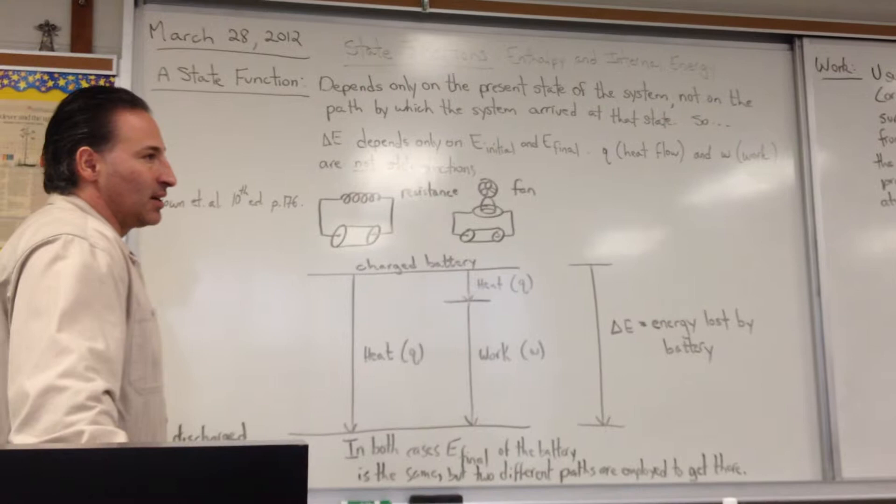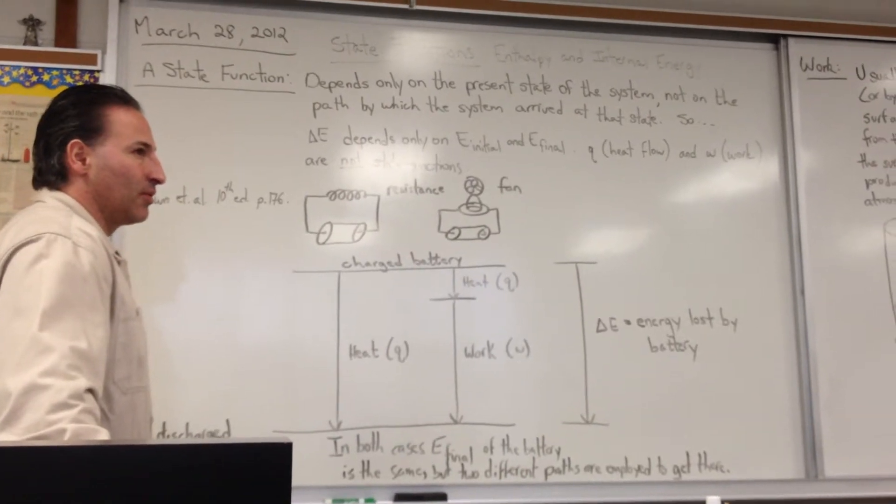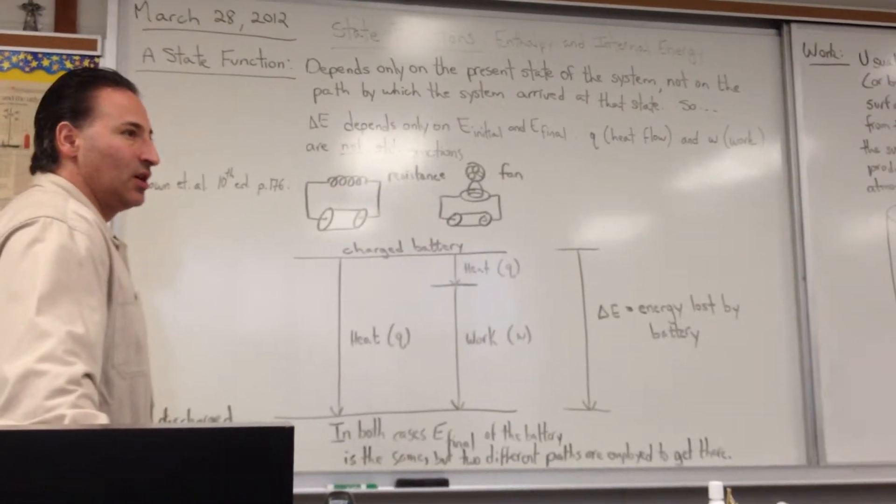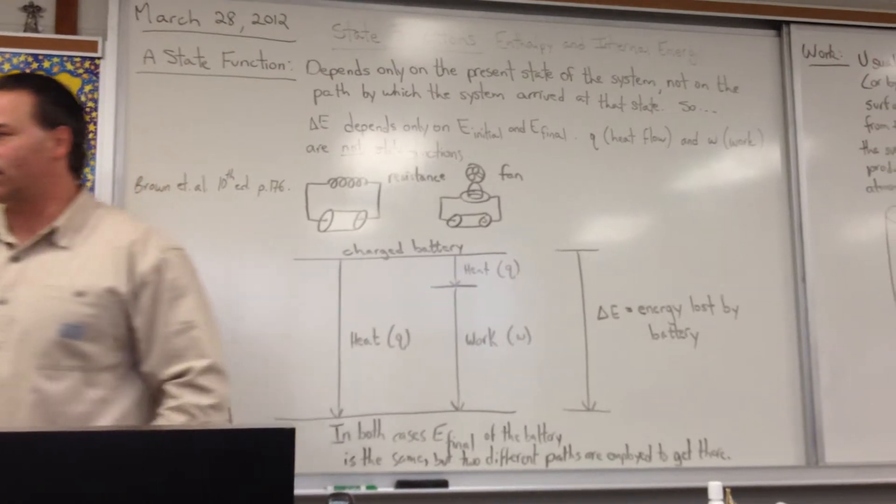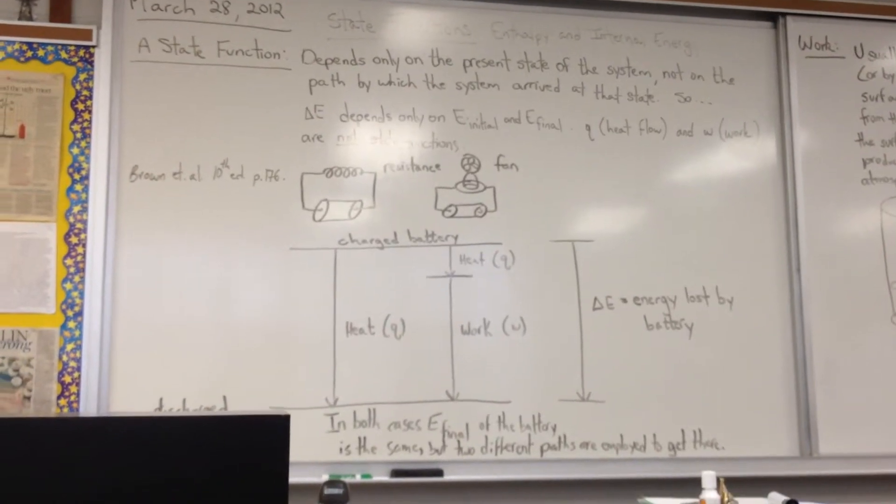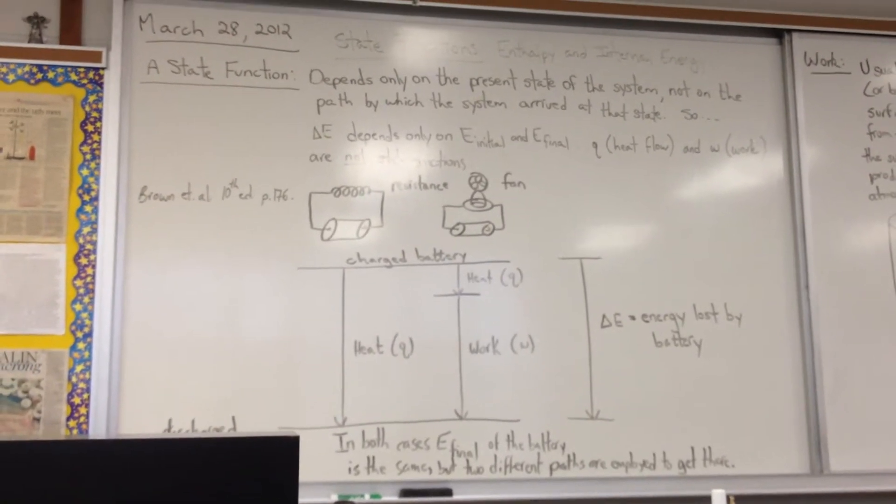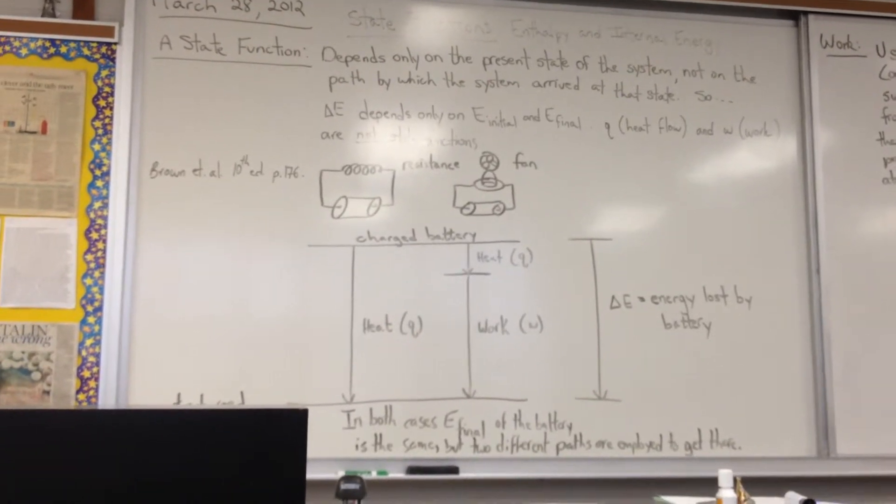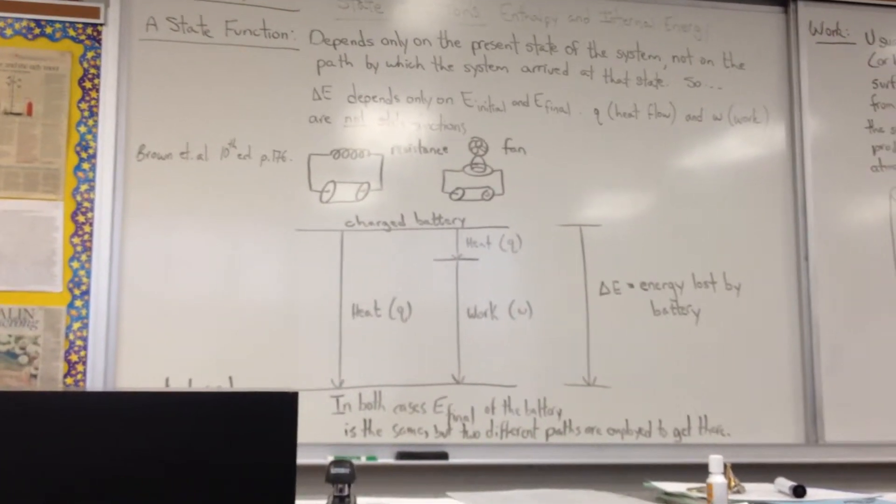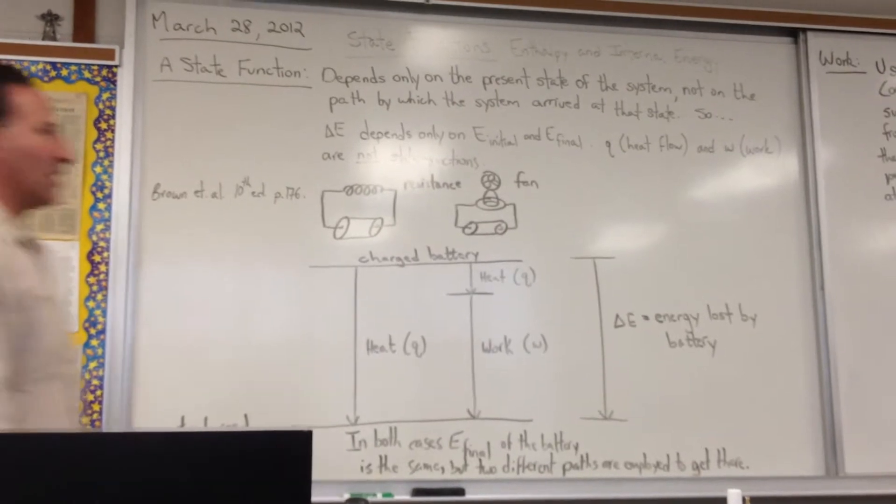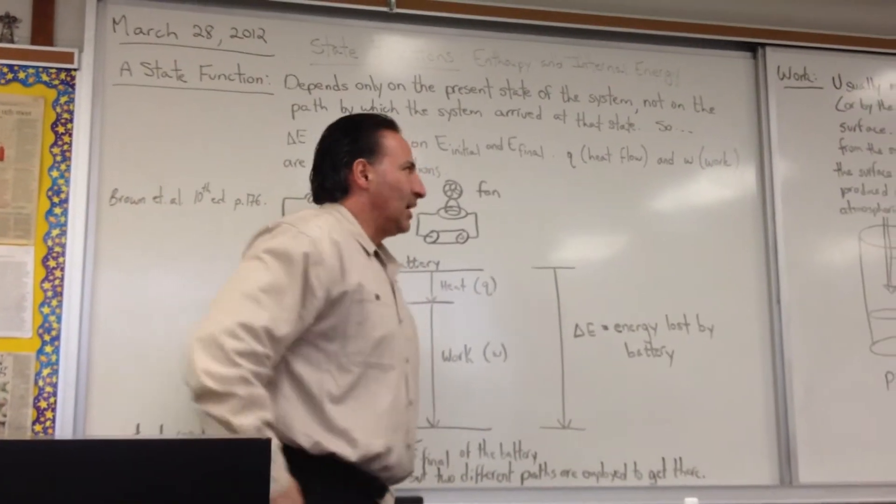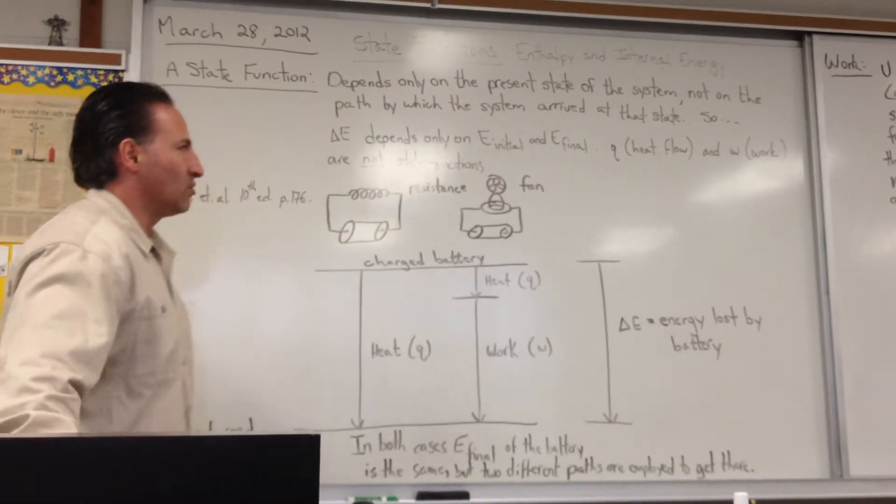We could make an analogy perhaps by referring to altitude as a state function. You can reach an altitude of 10,000 feet by getting into an airplane or by walking up a mountain. And once you reach an altitude of 10,000 feet, you are at that altitude, irrespective of the path you chose.